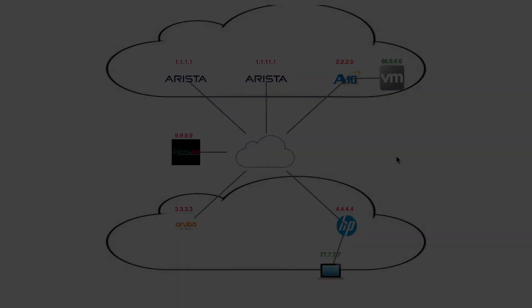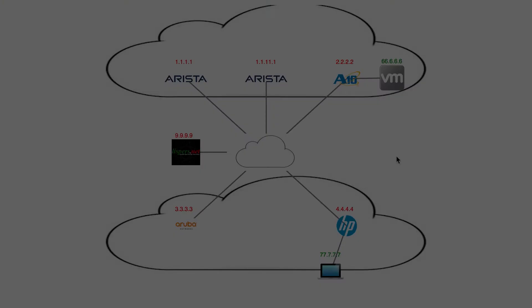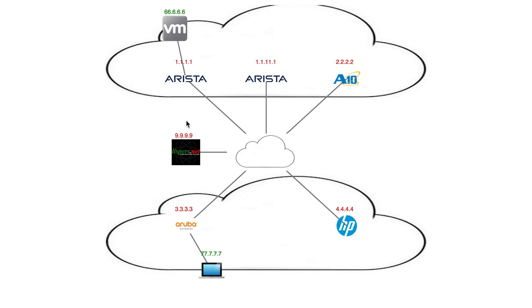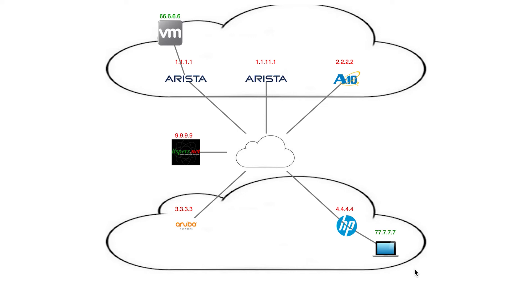Let's get to the demo. What you're seeing right here is a web application that is querying the map server so we can draw visually where the VMs are currently attached. The web application is using the API of the mapping database. This LISPERS.net system here is the map server. We assign a LISP endpoint ID 66 to the VM, and we assign a LISP endpoint ID 77 to the laptop. Those two things will continue to move, and the core doesn't have to know anything about it. The red addresses are the LISP routing locators that the core will route packets to — the one address is Arista, the two address is A10, the three address is Aruba, and the four address is HP.